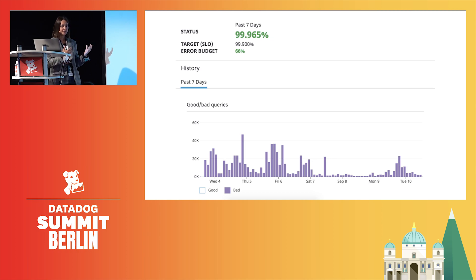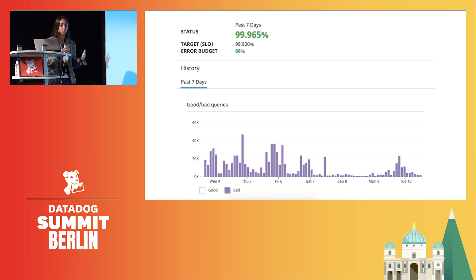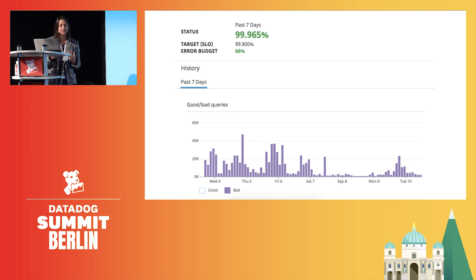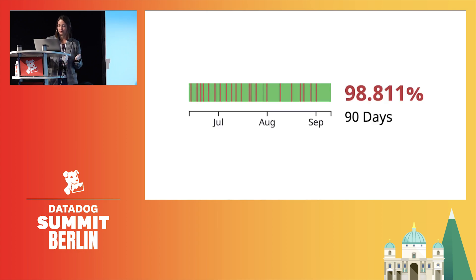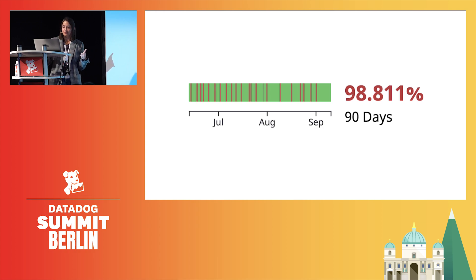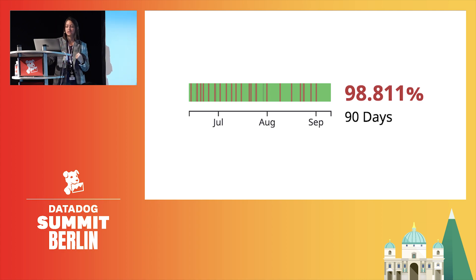Looking at an event-based SLI visualization, the bottom graph shows good and bad requests — filtered to just the bad ones, so if something is going wrong you can see exactly what's happening and drill in. I'm looking at a seven-day window, with a target of 99.9, and I'm currently at 99.965, so everything looks good. I also have the error budget, shown as the estimated percentage of requests that could potentially be in error. For the monitor-based or time-driven view, we're looking at the proportion of time — represented in green and red. In this case, 98.811% of the time I was up over this 90-day window, though it is in the red.